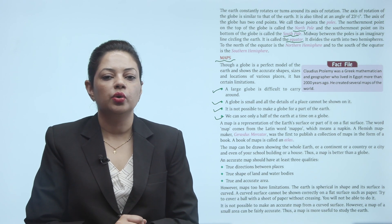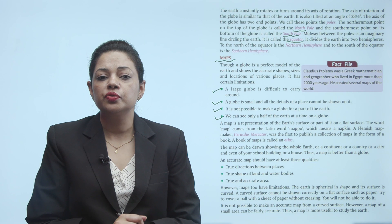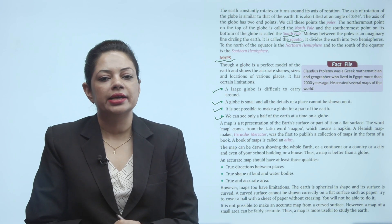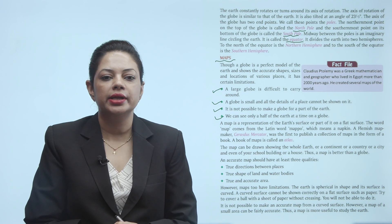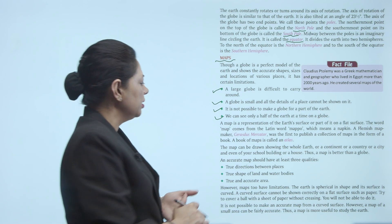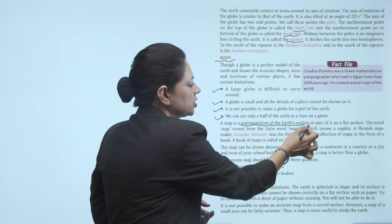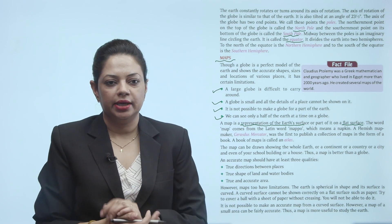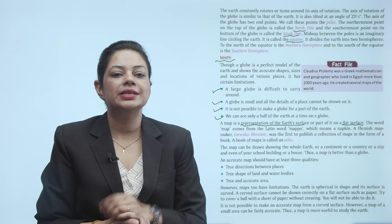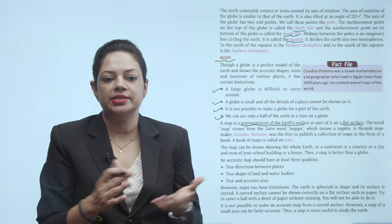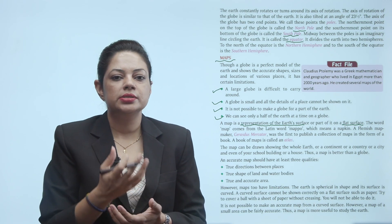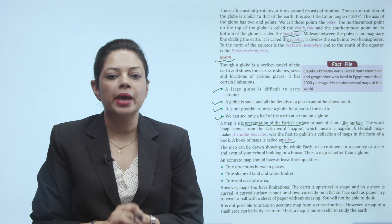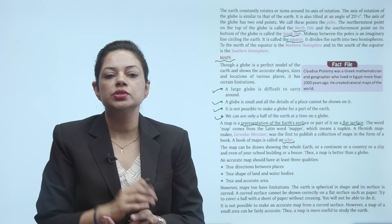A map is the representation of the Earth's surface or part of it on a flat surface. The word 'map' comes from the Latin word 'mapo' which means a napkin. A Flemish map maker, Gerardus Mercator, was the first to publish a collection of maps in the form of a book. A book of maps is called an Atlas. Map representation of the Earth's surface on a flat surface hai, aur jo word 'map' hai woh 'mapo' se liya gaya hai jiska matlab hai napkin. Greatest Mercator ne first Atlas book banayi.